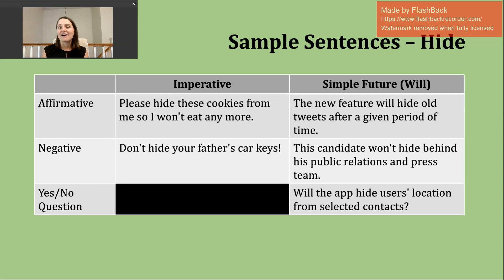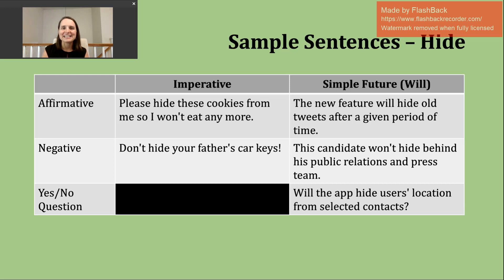Let's look at making an affirmative sentence in the imperative. Example: please hide these cookies from me so I won't eat anymore — meaning put them somewhere I can't see them. I've made it more polite with please, which you can place at the beginning or end. After please, you just use the base verb. For a negative command, start with do not or don't and then the base verb. Example: don't hide your father's car keys — one parent telling the children not to hide the keys, since he can't go to work or do other activities without them.